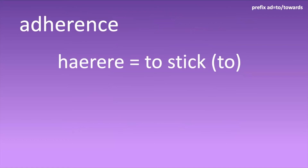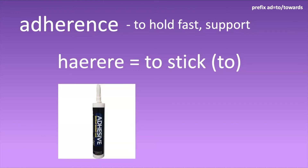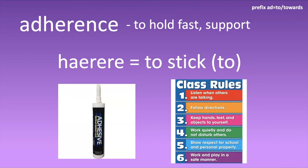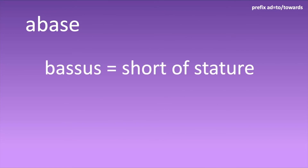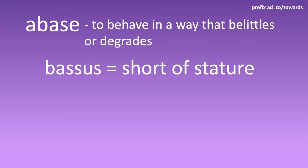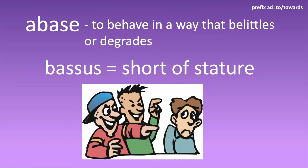'Adherence' comes from 'haerere,' meaning to stick to. So adherence is holding fast to something. This can be very physical, like adhesive — glue adheres to something. Or it can be holding fast to or supporting an idea or a set of rules, for example: you adhere to the class rules. Next, 'abase' comes from 'bassus,' meaning short of stature. So this is to try to make someone feel very small — to behave in a way that belittles or degrades. A bully would be trying to abase someone, but I'd argue the bully is abasing himself with that kind of behavior.